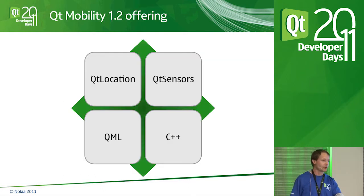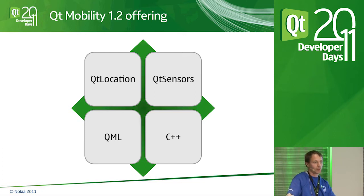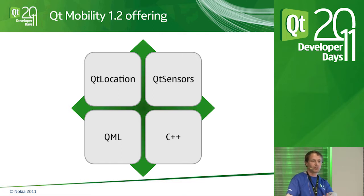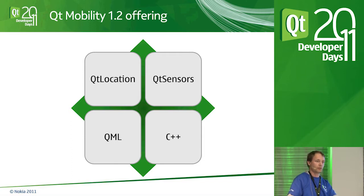So what do we have in the Qt Mobility 1.2 and upcoming Qt 5 offering? The two main things are the Qt Location library and Qt Sensors, which may be an important input source into what Qt Location does. I'll try to focus on location awareness, with a quick summary of Qt Sensors as well. You have two main languages: QML and C++. Almost the entire feature set — with a few exceptions I'll point out later — is available in both languages.